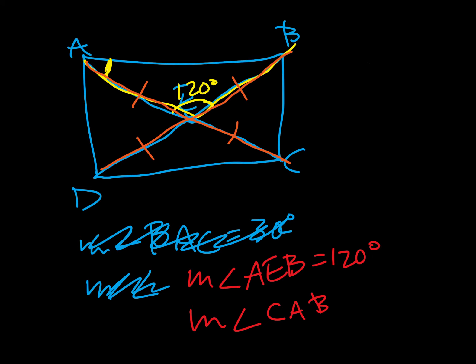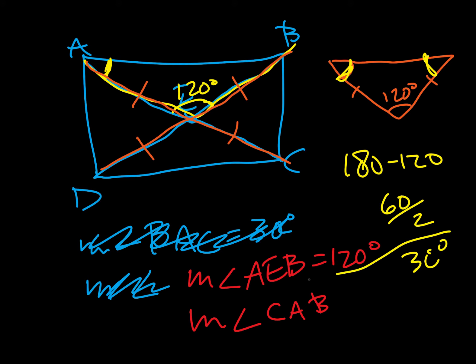And so, what that does, is it creates an isosceles triangle, right here, because those are congruent, and then we're just asked to find this. So, it's like one of those on one of our previous assignments, where we do 180 minus 120, left with 60, and then that 60 has to be split up between these two. So we cut it in half, and we get 30 degrees for the angle we're looking for.